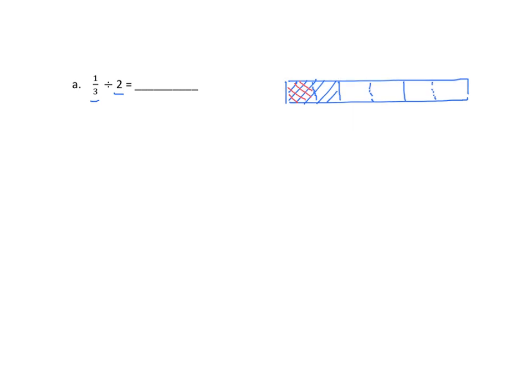Now let's take a look at what this represents. We see that we have now one, two, three, four, five, six parts, and one of those parts is double-shaded. So my answer would be one-sixth because it's one out of six.